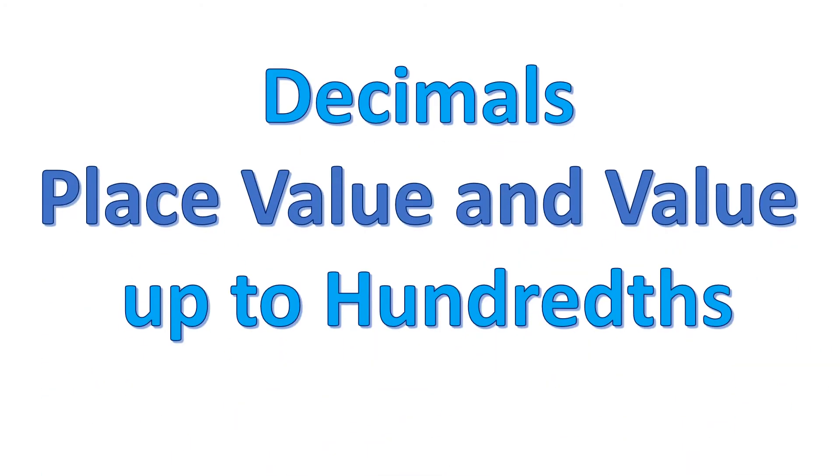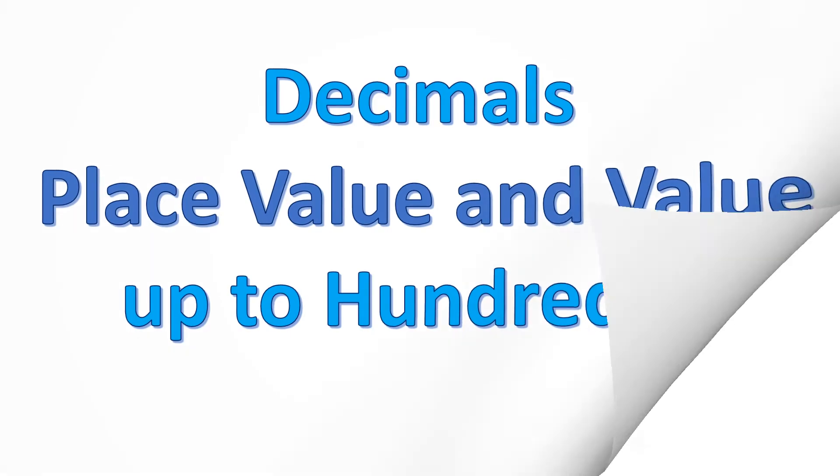In this video, I'm going to talk about decimals, place value, and value up to the hundredths place. For example, we have the decimal number 412.35. This is a decimal number since you can see a decimal point within the number, where it separates the whole number 412 from the decimal digits, the three and five. Let's move on to the place value and value of each digit within this number.